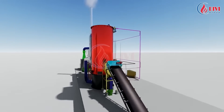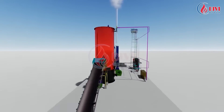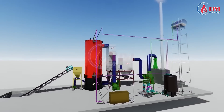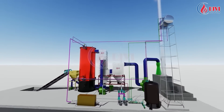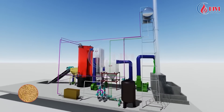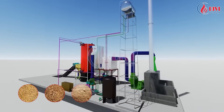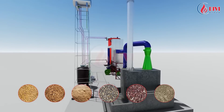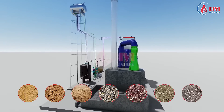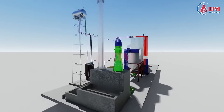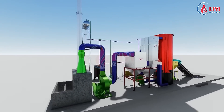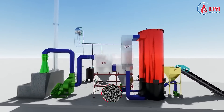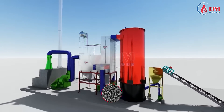First, let's look at some suitable fuels for this technology. These include rice husk, wood chips, sawdust, cashew shell, coffee husk, agricultural waste, bark, and more. The heater can also operate with fossil fuels such as imported Indonesian coal.